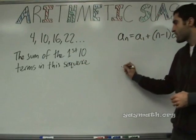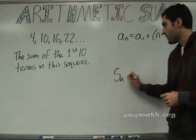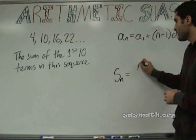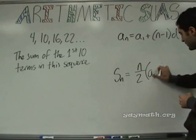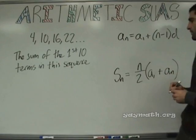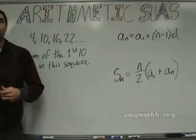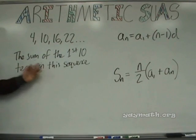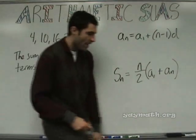The formula for the sum of an arithmetic sequence is as follows: the sum of any number of terms, S_N, equals N over 2 times the first term A1 plus the last term. The last term in question. So let's take a look at this. We want the sum of the first 10 terms in the sequence. Let's start to plug in.